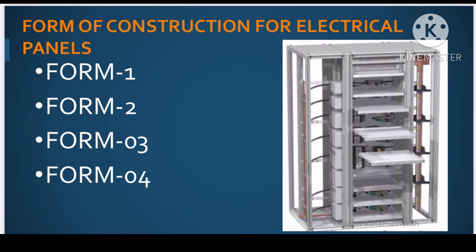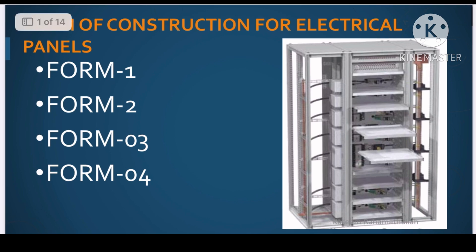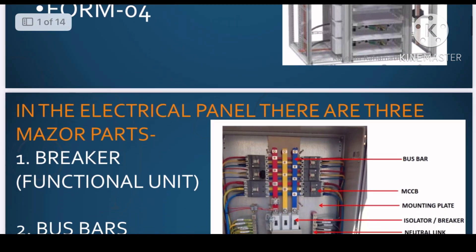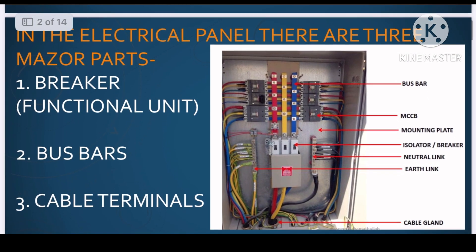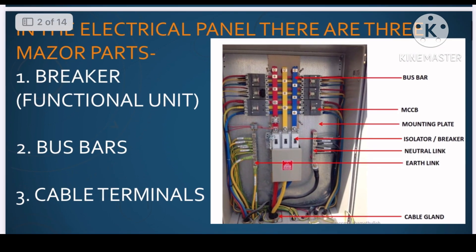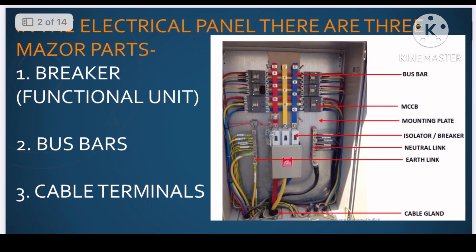In order to understand form 1, form 2, form 3 and form 4, let us first understand what is the form of construction for electrical panel. In order to understand the form of construction for electrical panel, we have to understand what are the major components for the electrical panels.